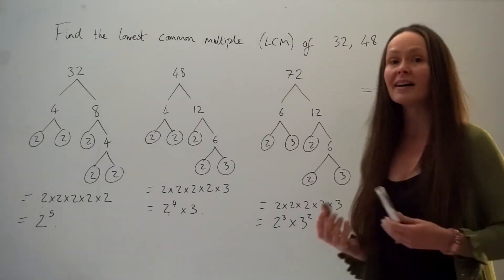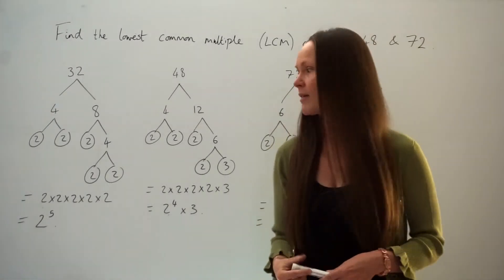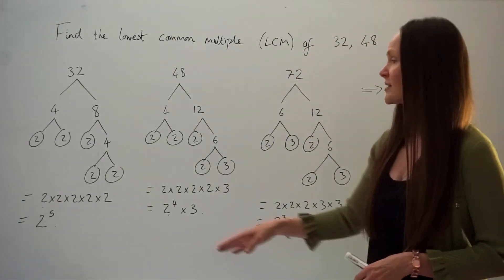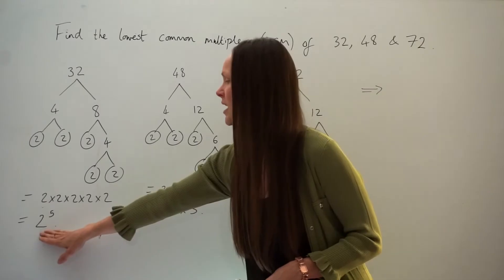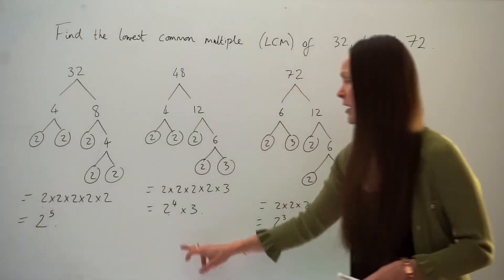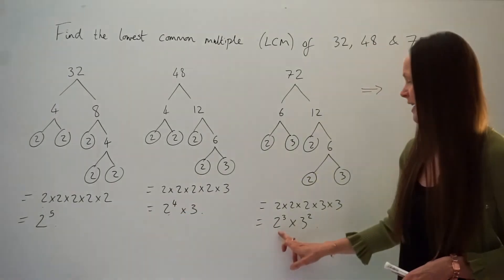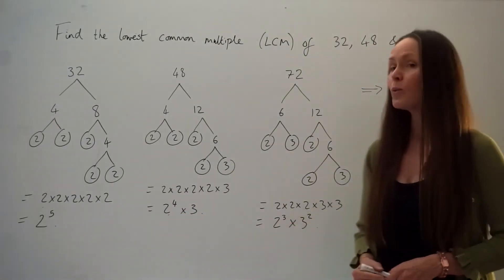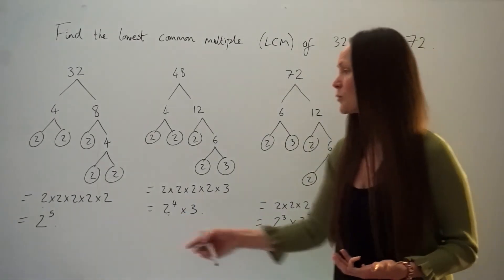Okay, so if I start over on the left hand side here I can see we've got 2 to the power of 5 here, I've got 2 to the power of 4 and here I have 2 cubed. So the one with the greatest power is the first one, 2 to the power of 5, so you need to write that down.